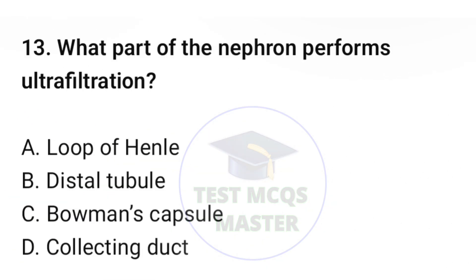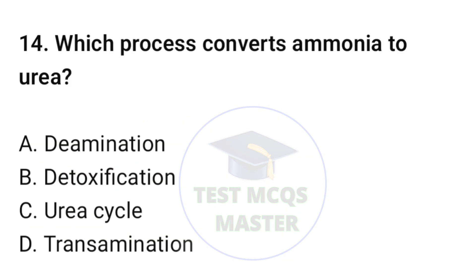Question number thirteen: what part of the nephron performs ultrafiltration? The correct option is C, Bowman's capsule. Question number fourteen: which process converts ammonia to urea? The correct option is C, urea cycle.